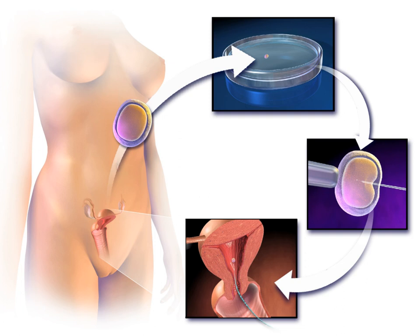Embryo splitting can be used for twinning to increase the number of available embryos. A preimplantation genetic diagnosis procedure may be conducted on embryos prior to implantation, as a form of embryo profiling, and sometimes even on oocytes prior to fertilization. PGD is considered in a similar fashion to prenatal diagnosis.